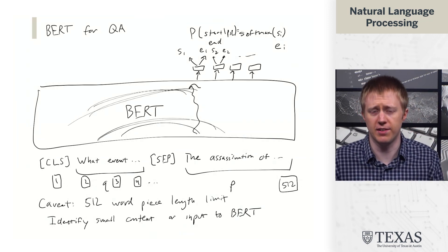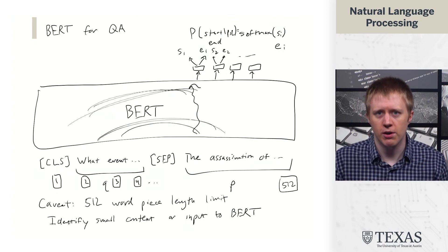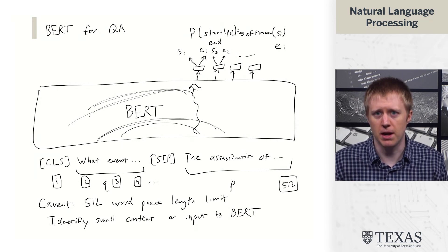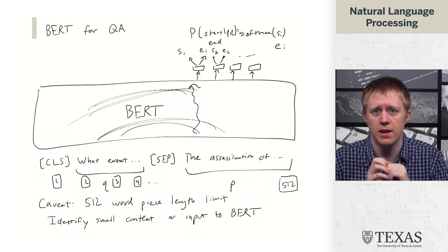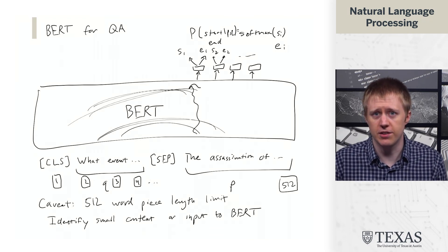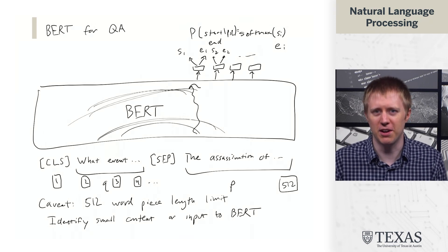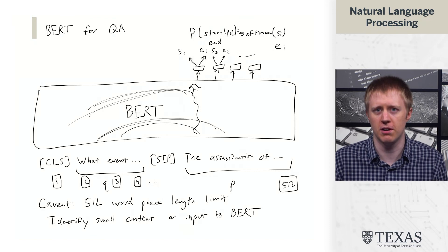There are methods that use several different 512-token chunks, run BERT over each of those, and then pool the results. Generally, what's needed is a coarse-grained pipeline where some other model determines the small passage to run the BERT model on — focus in on that and then use BERT to get the answer. BERT is very convenient for QA problems, but it's not without its shortcomings and presents logistical challenges that people in QA have spent many hours trying to fix.